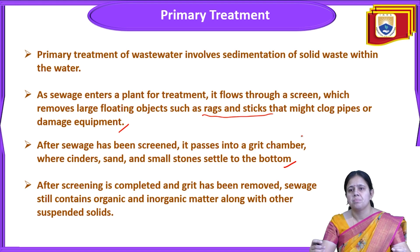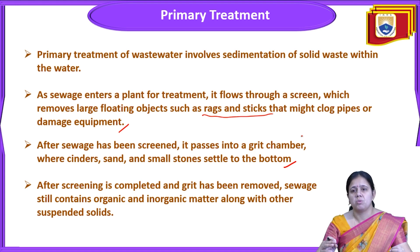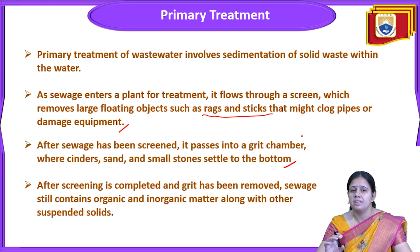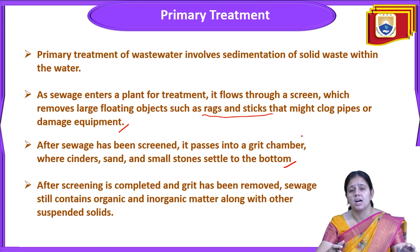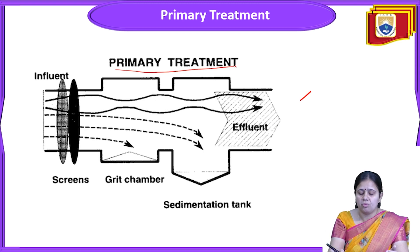After screening is completed and grit is removed, the sewage still contains organic and inorganic matters, since these are contaminants present in the water. This organic and inorganic matter along with other suspended solids will be cleaned in the secondary treatment process. You can see this is the picture of a sedimentation tank, which is involved in the primary treatment unit.